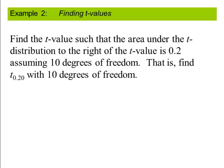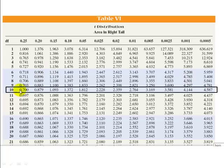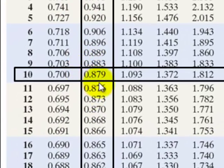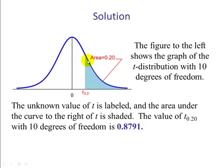So let's do an example. Find the t value such that the area under the t distribution to the right of a t value is 0.2, assuming 10 degrees of freedom. That is, find t sub 0.20 with 10 degrees of freedom. So if we go to the table, 10 degrees of freedom will tell us what row, and since we want area to the right for .20, that tells us the column, and then we see this is our value of t. So the value of t where the area to the right is 20% is, according to our table, .879.